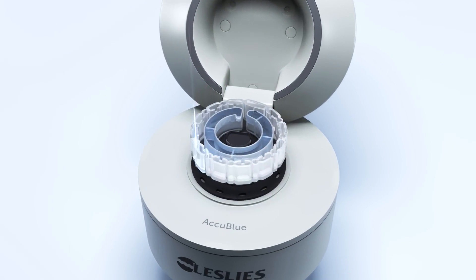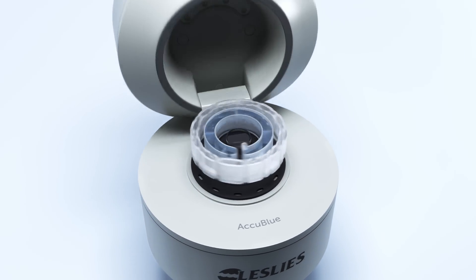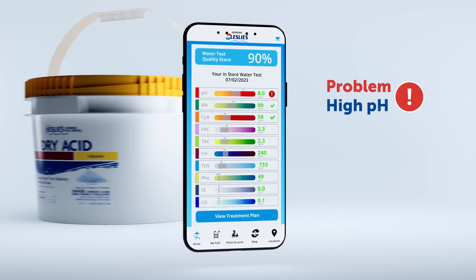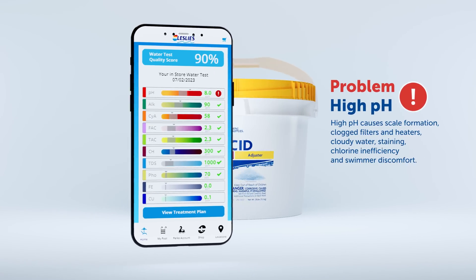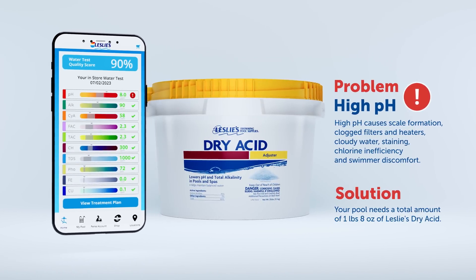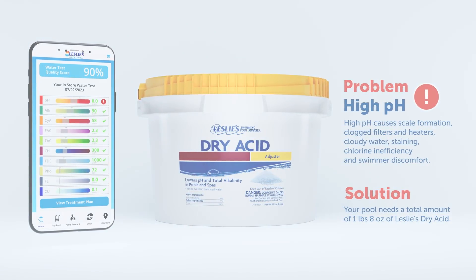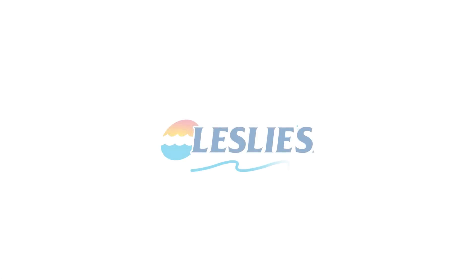Using advanced photometry, wavelengths of light pass through the water sample for an accurate calculation of 10 essential parameters in 60 seconds. Leslie's proprietary software then calculates an overall health and safety score for your pool and generates a customized treatment plan for achieving perfectly balanced water.